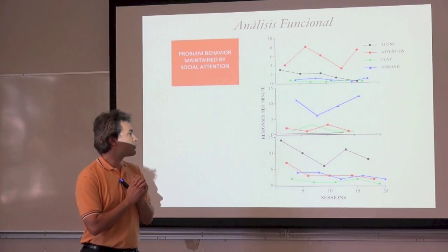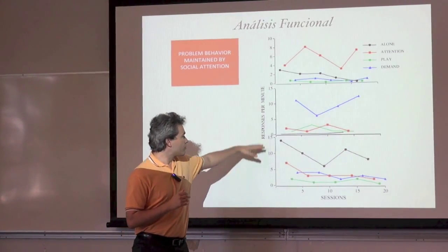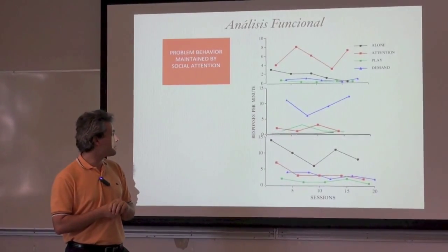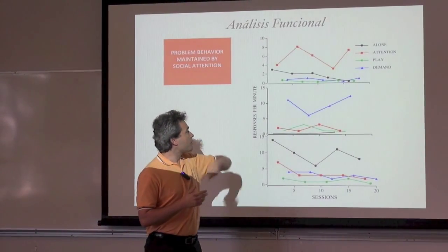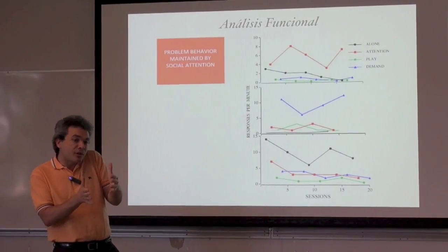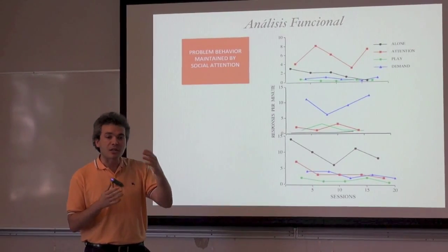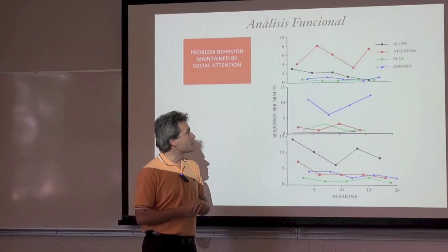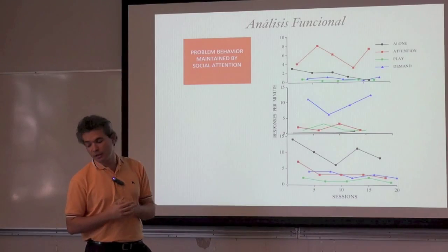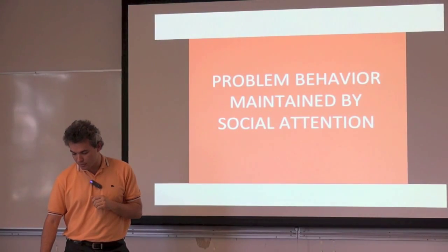A functional analysis is typically graphed with level of responses on the y-axis and time, usually in the form of sessions, along the x-axis. In the first graph, we see higher behavior in the condition called 'attention' — a condition in which every time the behavior occurs, the caregiver or experimenter presents attention following the problem behavior. If we see this pattern over time, we take that as evidence that behavior is maintained by access to social attention.